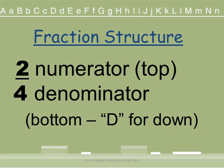The way the fraction looks is that it's a number on top with a line and then a number on the bottom. The top number is called the numerator and the bottom number is called the denominator. The way I remember this is that denominator starts with D — D is for down — so the number that is down, the number that is under the line, the bottom number is the denominator.